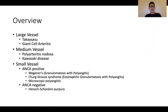In terms of the primary vasculitic disorders, these can be classified into large vessel, medium vessel, and small vessel diseases. For large vessel, it will be Takayasu as well as giant cell arteritis. Medium vessel will be polyarteritis nodosa and Kawasaki. For the small vessel diseases, they are subclassified into ANCA-positive and ANCA-negative disorders. For ANCA-positive, we have granulomatosis with polyangiitis, previously known as Wegener's, eosinophilic granulomatosis with polyangiitis, previously known as Churg-Strauss syndrome, and microscopic polyangiitis. For small vessel ANCA-negative, there is Henoch-Schönlein Purpura.